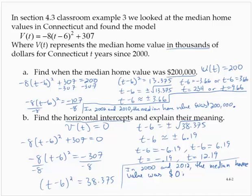Now that doesn't make any sense. The value of a home cannot be $0. So this is a model breakdown. It doesn't make any sense to say that the value of the home is 0. So although we can solve it algebraically, it just doesn't make any sense in context.